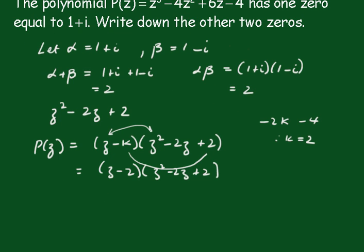So the other two zeros are, well, we've got this. So all the zeros are α = 1 + i, β = 1 - i, and the third one, γ = 2.